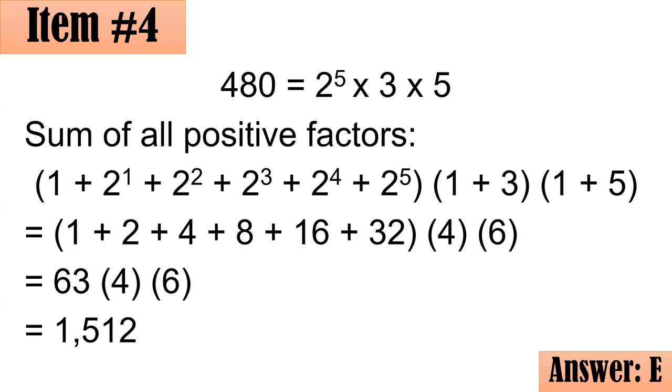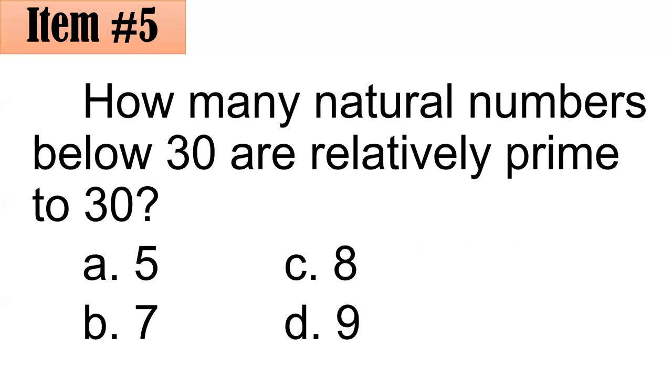Number 5. How many natural numbers below 30 are relatively prime to 30? Is it 5, 7, 8, or 9? When we say relatively prime to 30, the GCF of the number with 30 should be 1. For example, 7 is relatively prime with 30 because the GCF of 7 and 30 is 1. However, 9 is not relatively prime with 30 because the GCF of 9 and 30 is 3.